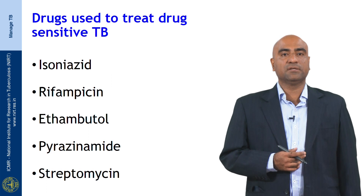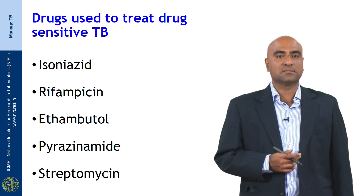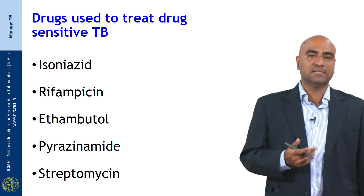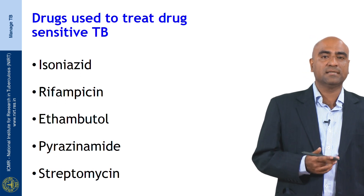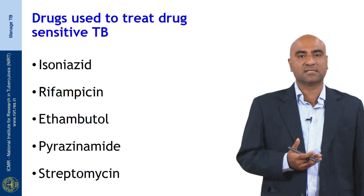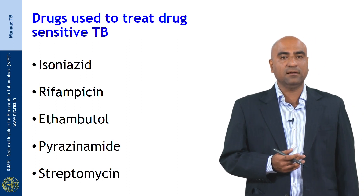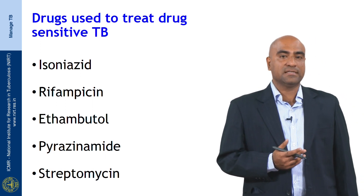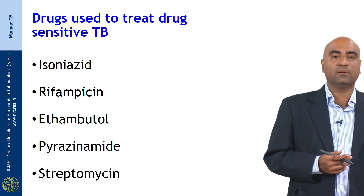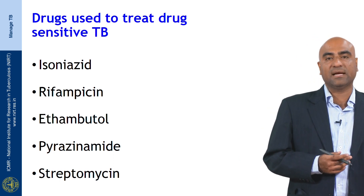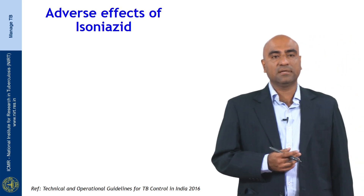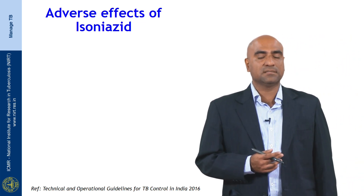What are the drugs used to treat sensitive tuberculosis? All of us must be familiar with these from our undergraduate days. There are 5 drugs commonly used to treat drug-sensitive tuberculosis: INH or isoniazid, rifampicin, ethambutol, pyrazinamide, and streptomycin. Let us see the adverse effects of each of these drugs one by one.